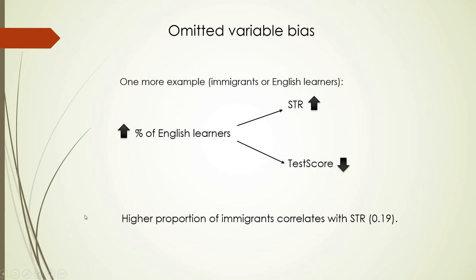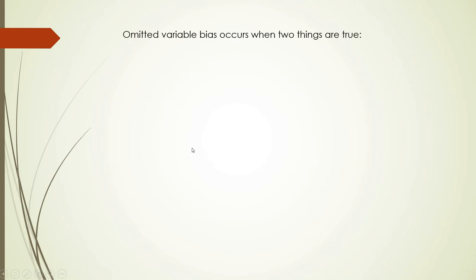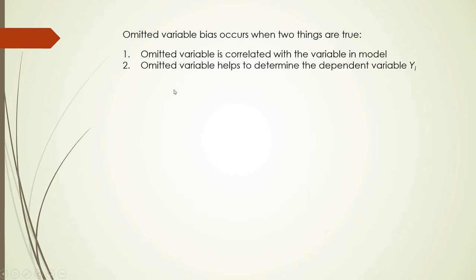We checked the coefficient of correlation, which is 0.19 — not very high, but positive, showing correlation between the percentage of English learners and student-teacher ratio. Omitted variable bias occurs when two things are true: the omitted variable is correlated with the variable in the model, and the omitted variable helps determine the dependent variable — as with English learners influencing test scores.